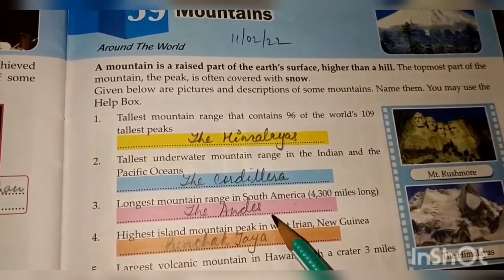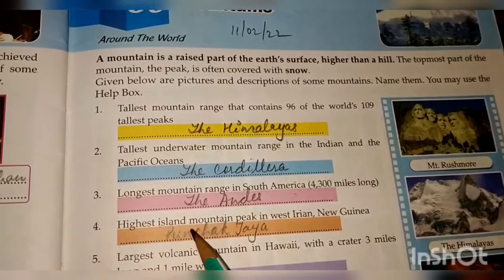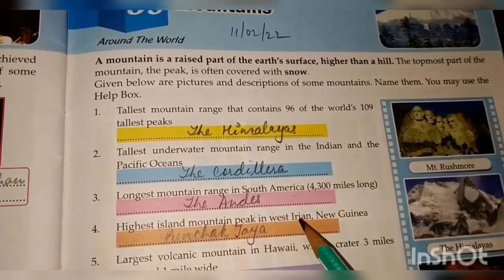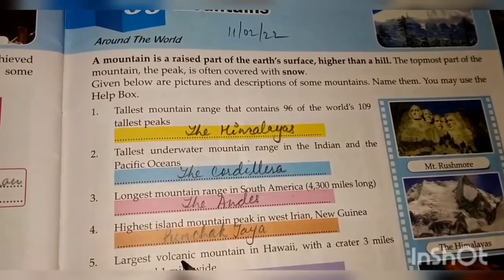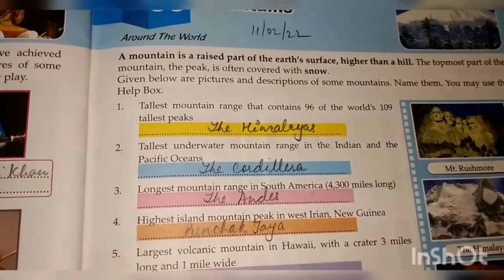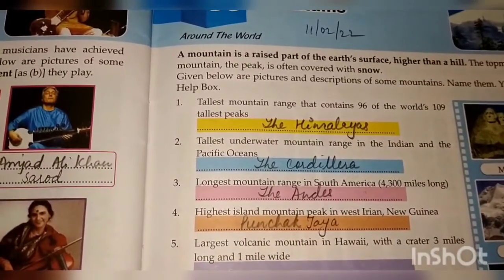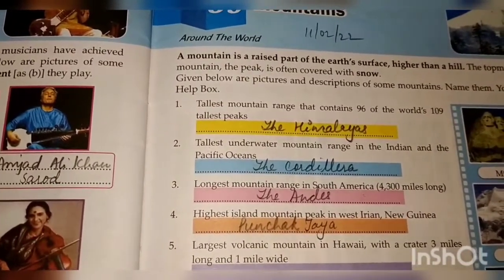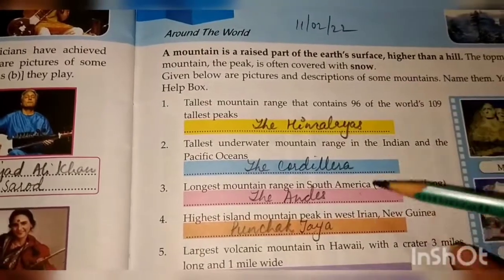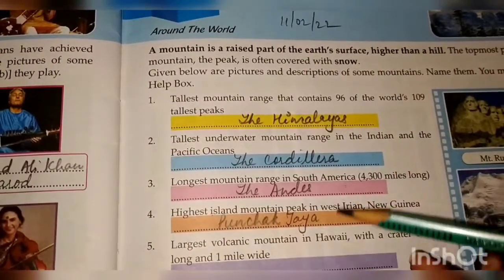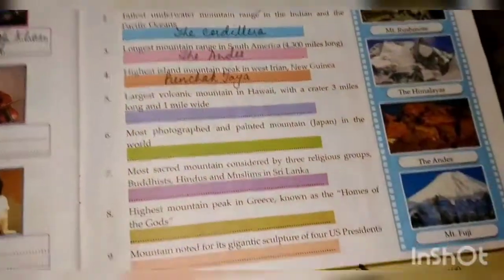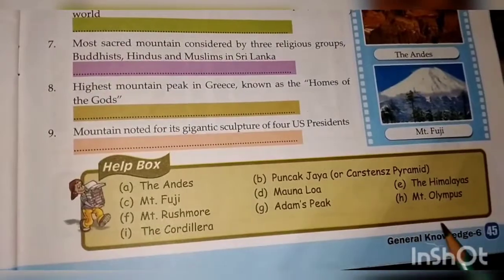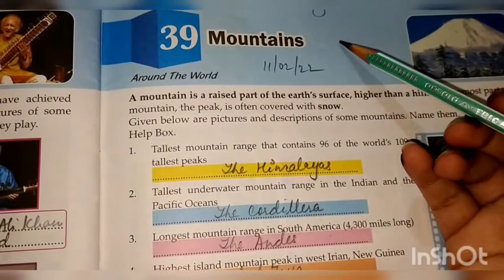Fourth one: the highest island mountain peak in West Irian, New Guinea. The answer is Puncak Jaya. These are the mountains you all have to write in the given boxes. You may use the help box on page number 45.